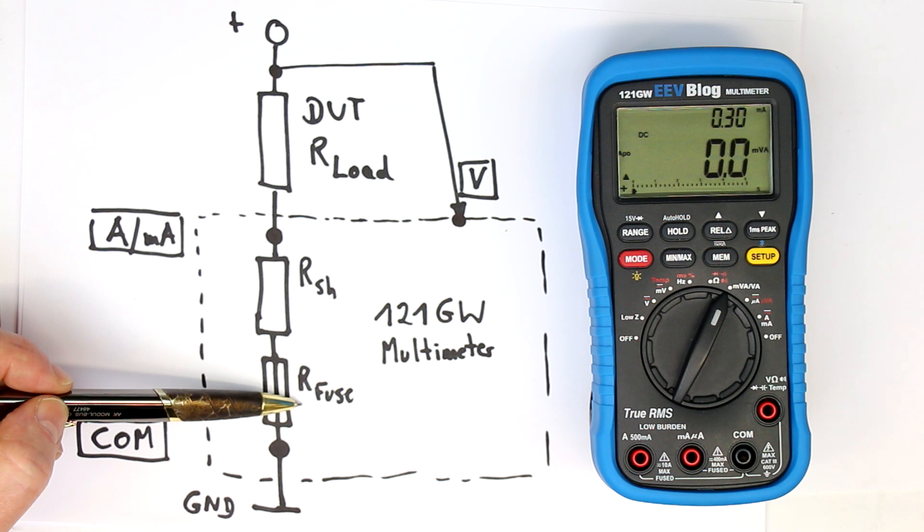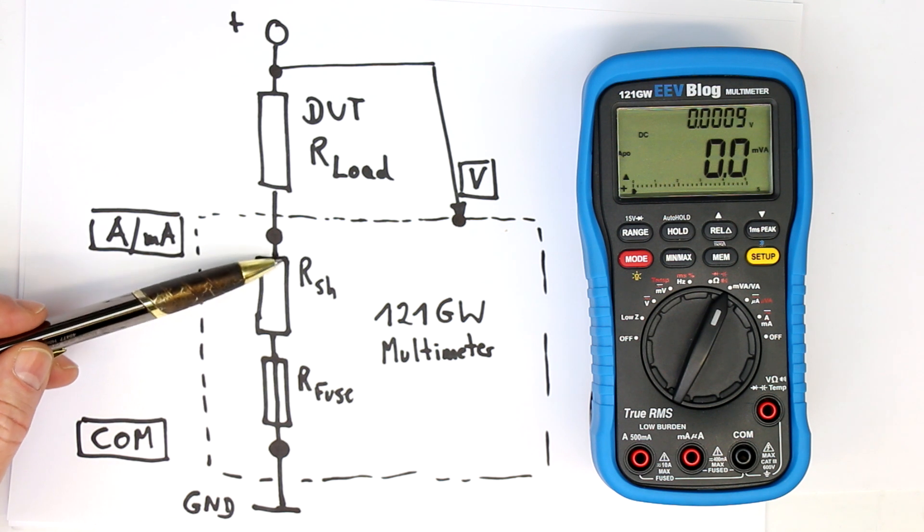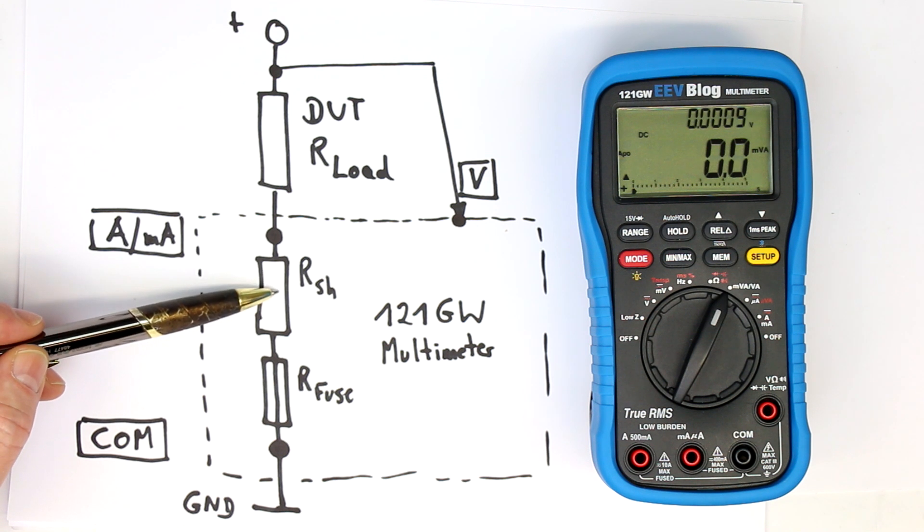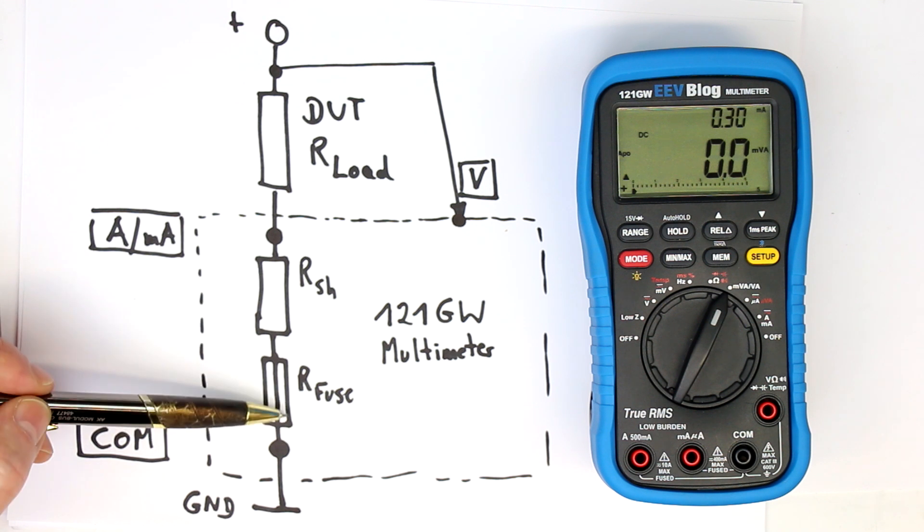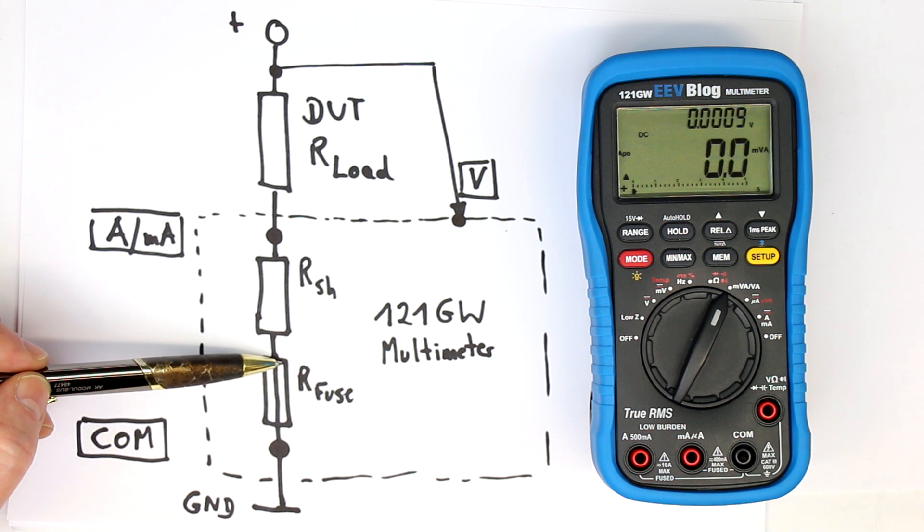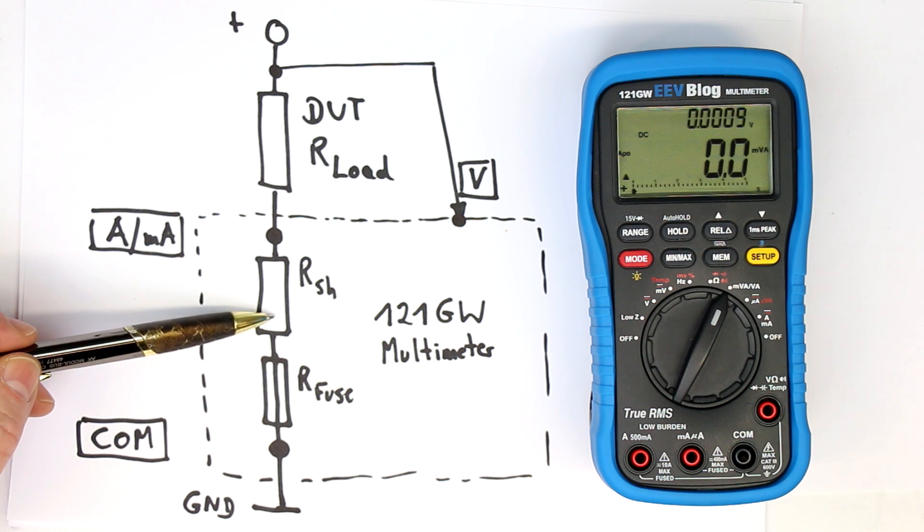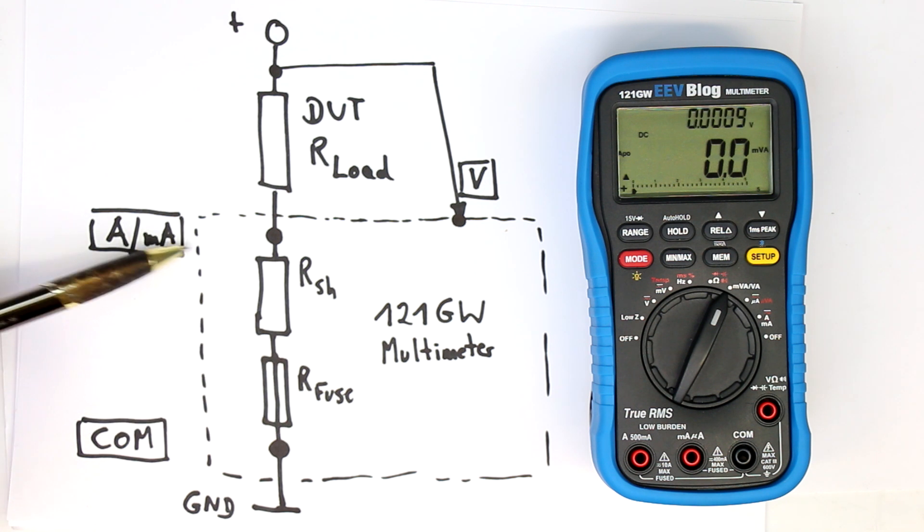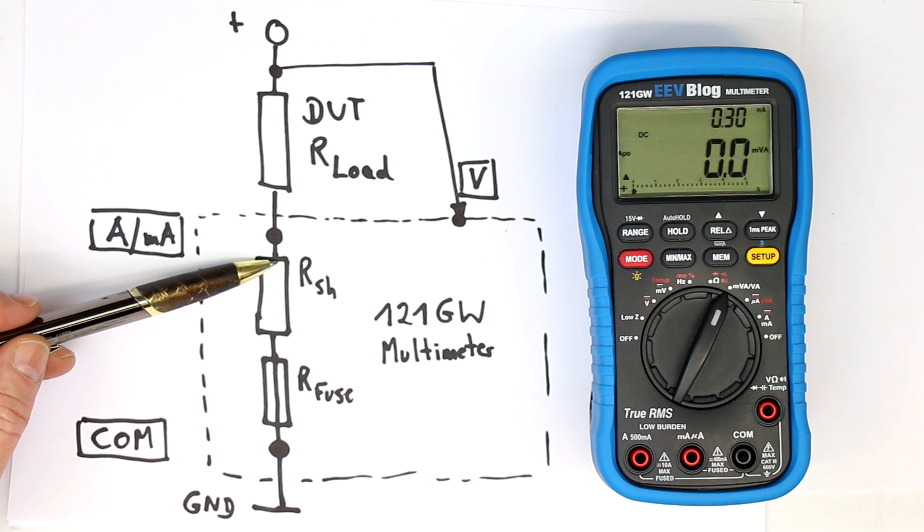Depending on whether you're using the amps, milliamps, or microamps input, the shunt resistor is either 10 milliohms, 1 ohm, or 100 ohms, and the fuse is either in the milliohms range or between 1 and 2 ohms for the milliamps and microamps input. We can verify this twice: first by looking at the schematic which is open source, and second we will measure it.